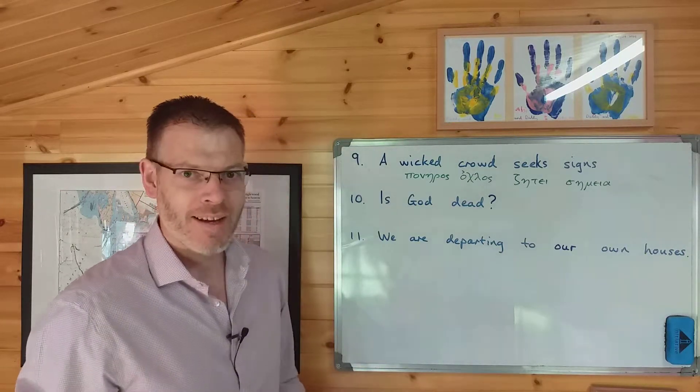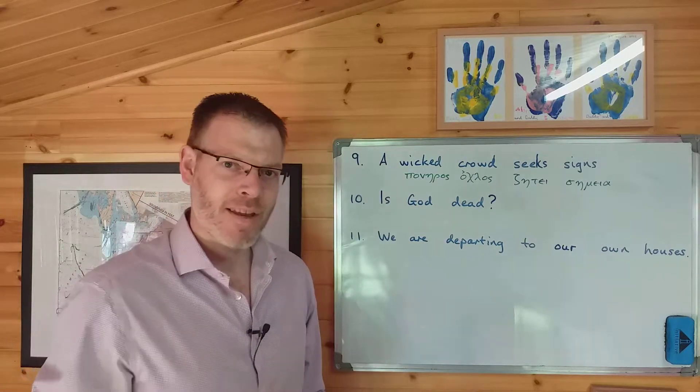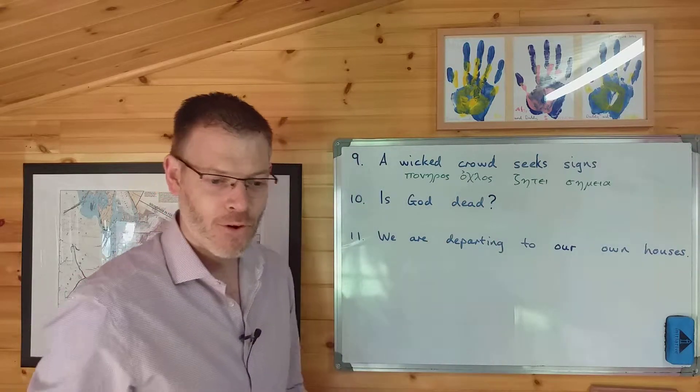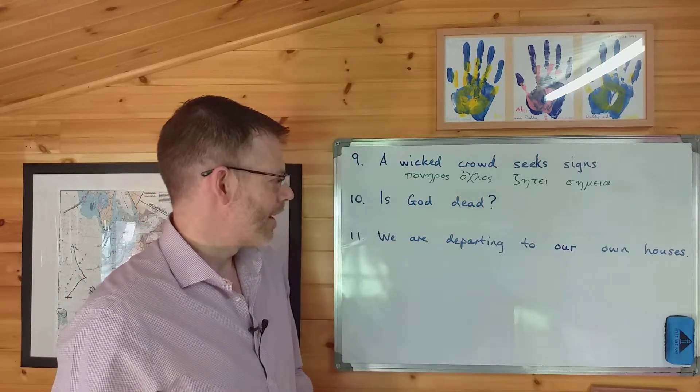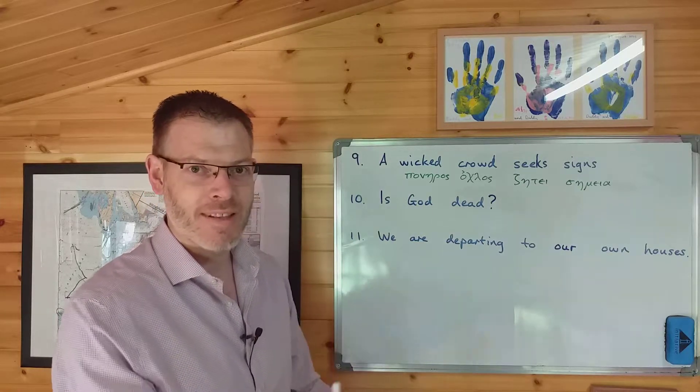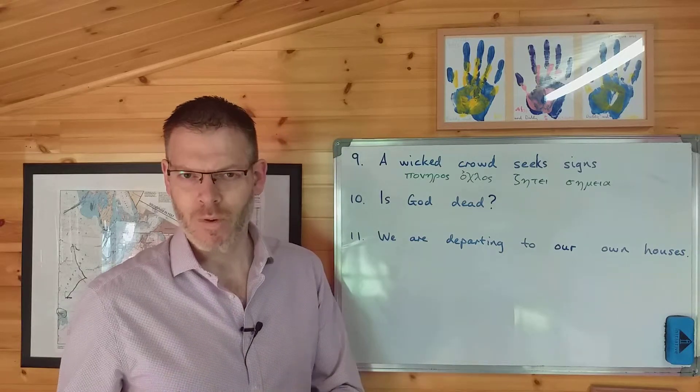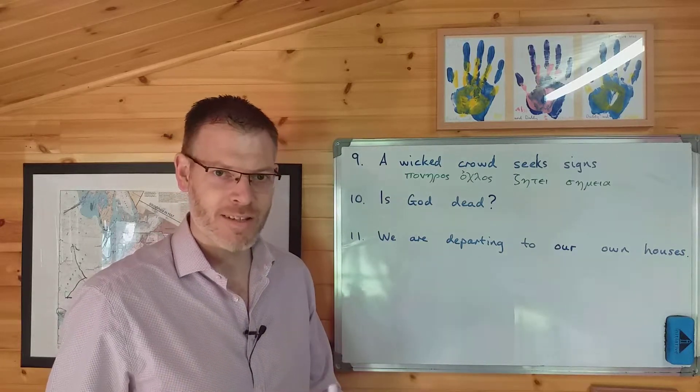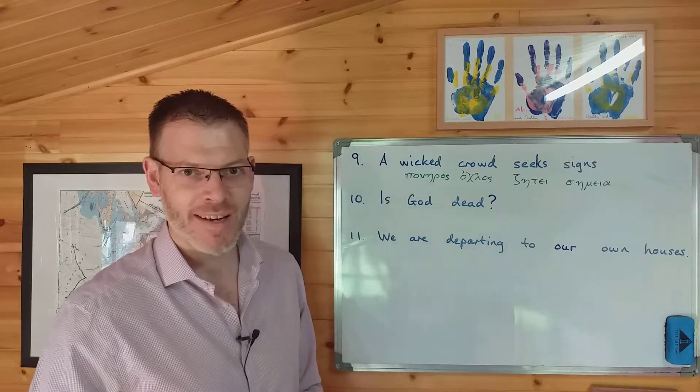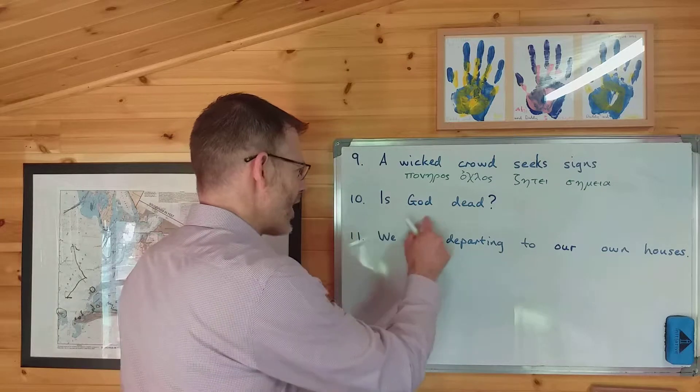Okay, let's take a look now at number ten. Is God dead? A bit trickier this one, because we've got a question mark, but as I've mentioned before, if you have a question mark, the way to translate it most simply is just to translate it as a statement, and then at this stage, just slap the question mark in again afterwards. Later on, we will come to some subtleties about different kinds of questions that you can ask in Greek, but at this stage, just slap the question mark in and a statement magically becomes a question.